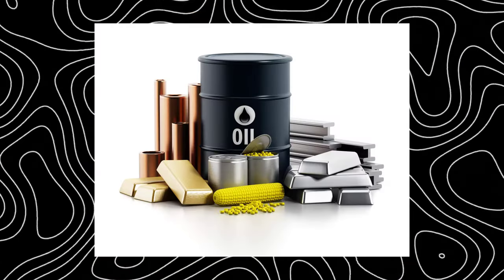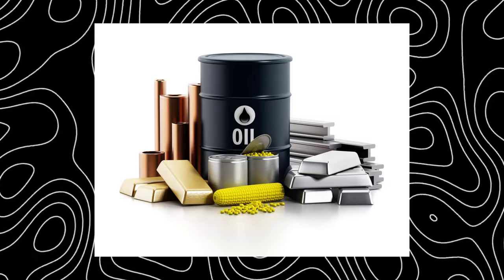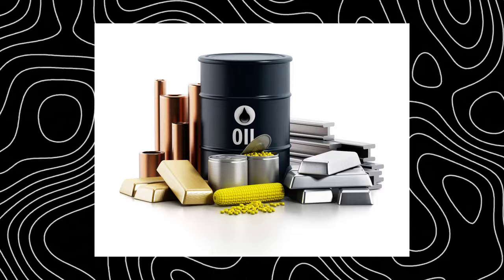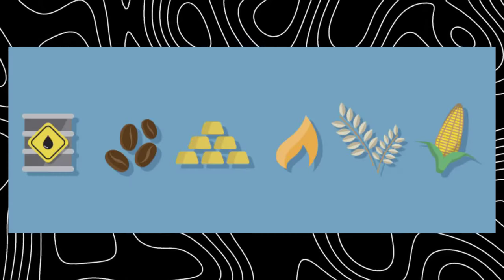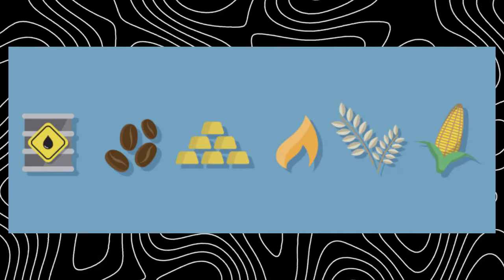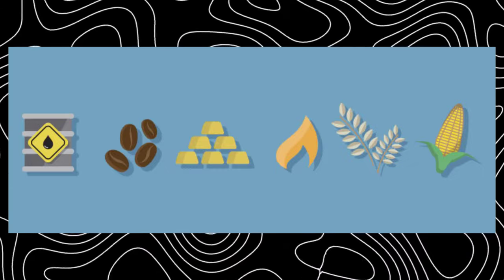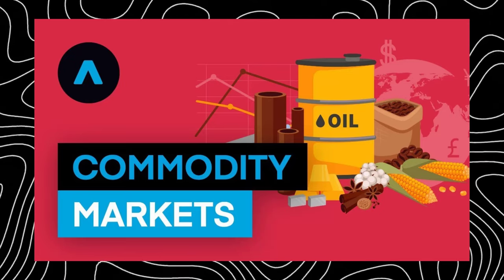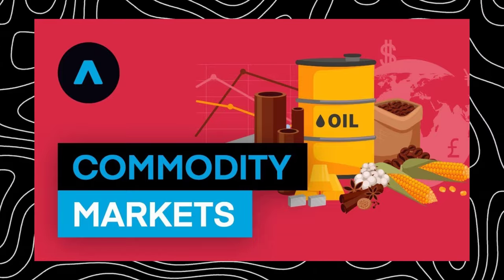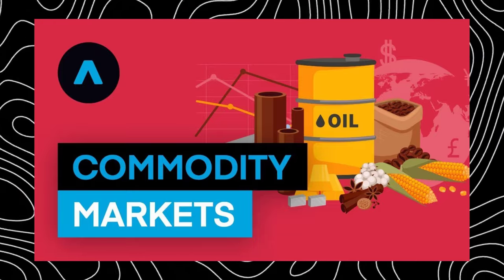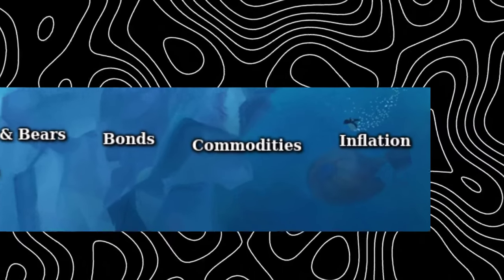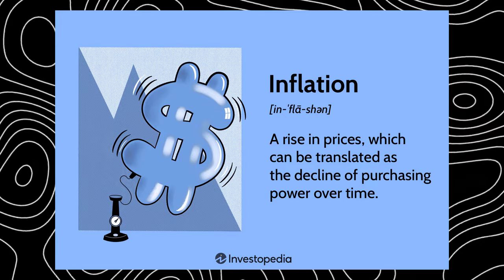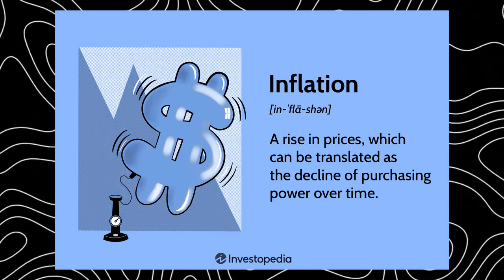Commodities: raw materials like gold, oil, wheat, or soy. Investing in these can guard your money against inflation and adds variety to your portfolio. Some swear by gold and silver as must-haves, especially as a safe bet during global economic uncertainty. However, prices can easily swing based on countless factors, so while commodities can be a solid hedge, they're not without risk. Just like any asset, timing and other factors matter.